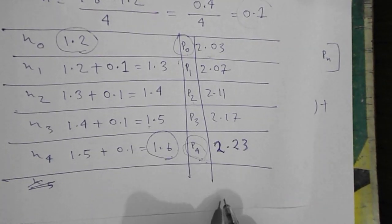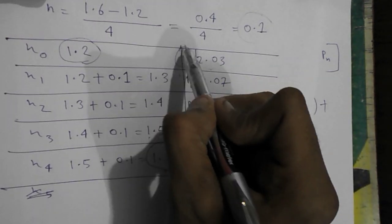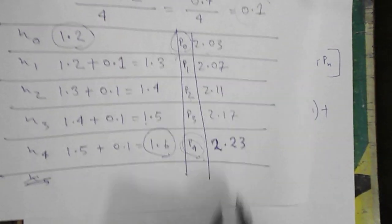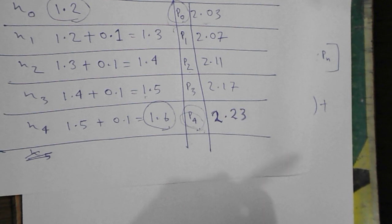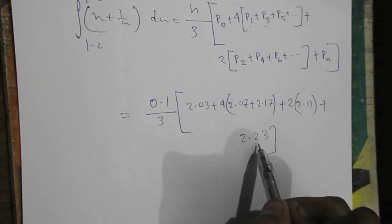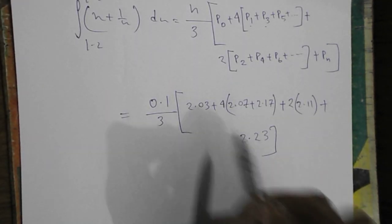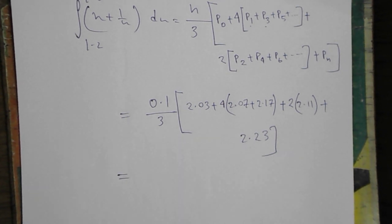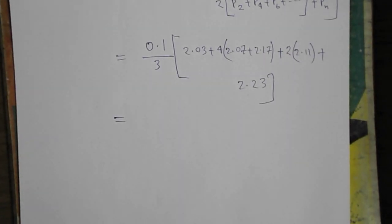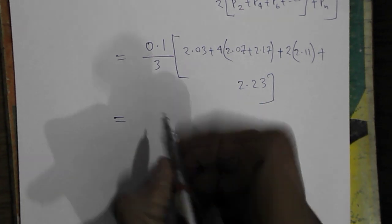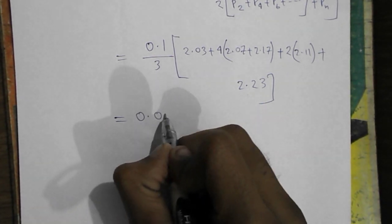If our number of p's will be more, then we can take more odd numbers and even numbers. But the first number, that is p0, and the last will be whatever we will not multiply anything with that. And what is the last work, that is only the calculation part. Our h is 0.1 by 3, that is 0.03.